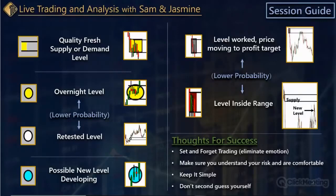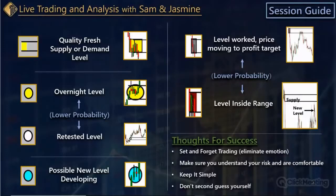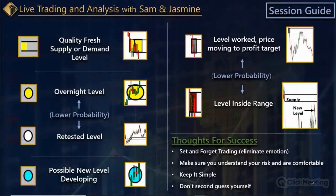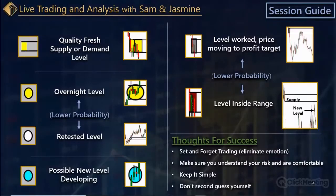Think about it: inside each zone — say a demand zone or supply zone — there are multiple price points, and each price point represents a different amount of willing demand or willing supply. Say a demand zone is five points from top to bottom and price only went one point in on the first pullback. The other four price points — not one buy order in those four price points has been filled yet. So it's not necessarily that low of a probability. Often what happens is that first pullback just touches the level and moves higher, and that initial move higher opens up the initial profit zone because it's filling the sell orders above — so the next move down into the level creates the bigger move up. A lot of times that second pullback is really strong.